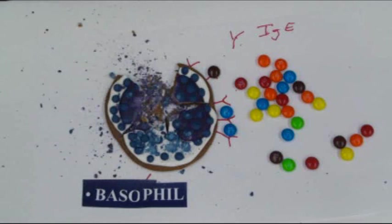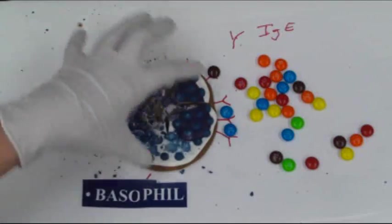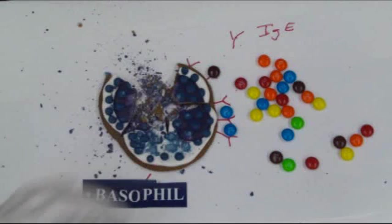So histamine is what you take your Claritin, your Zyrtec, or whatever. You take an antihistamine to block the action of the histamine that's been released by this cell breaking apart based on high exposures to the allergen.